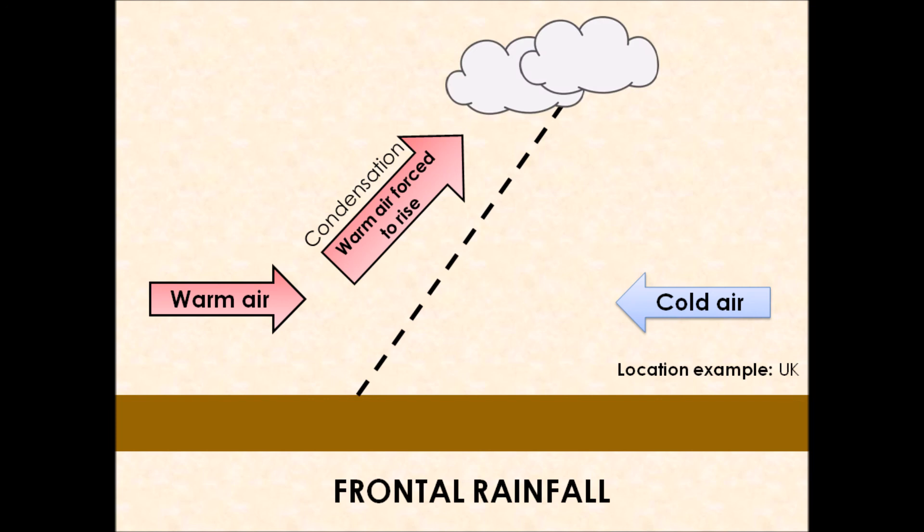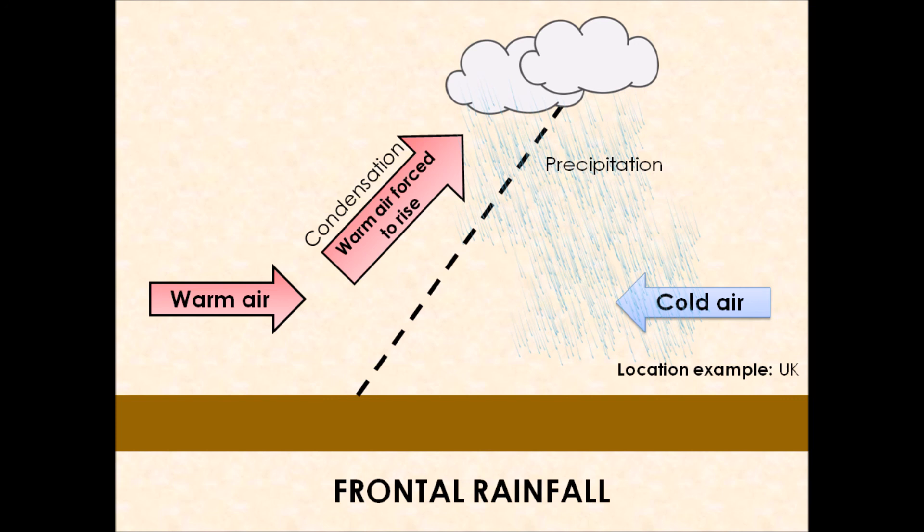Over time, when we have those clouds that are fully established with all this water vapour condensing into droplets, we will eventually get precipitation taking place as well. That rain, hail, sleet, and snow. So again, you need to know a diagram for frontal rainfall, and you will also need to explain step by step the process of frontal rainfall and how it happens.